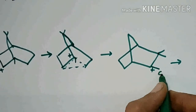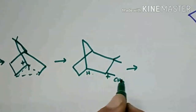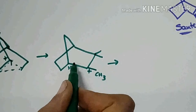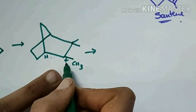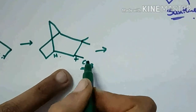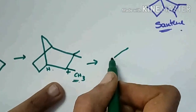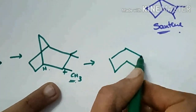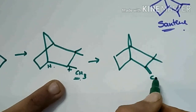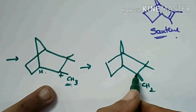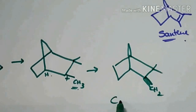Here is CH3 and here one hydrogen is there. This hydrogen will not be deprotonated because it will be unstable. So here this CH3 is not migrated. Here CH3 is there — one of the hydrogens is deprotonated and here it will form a double bond. It is the final product — it is known as camphene.